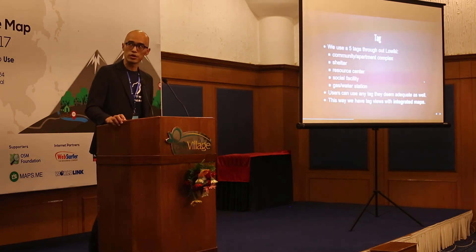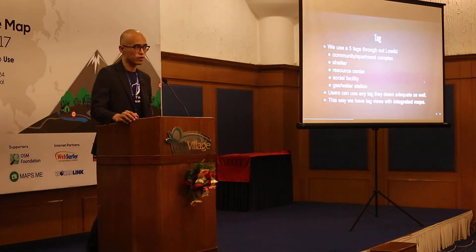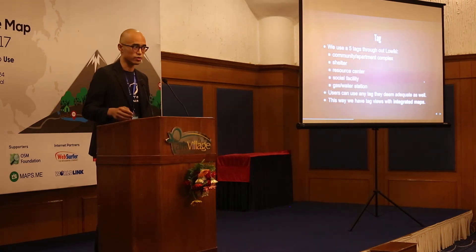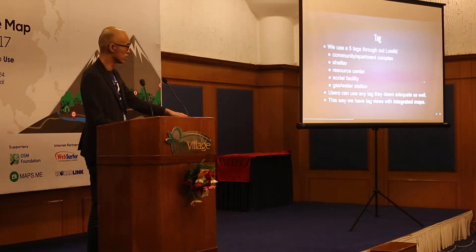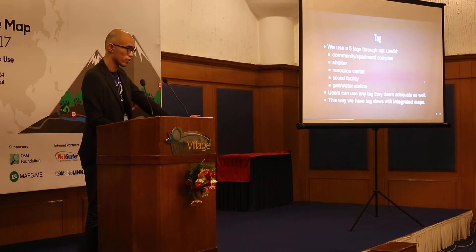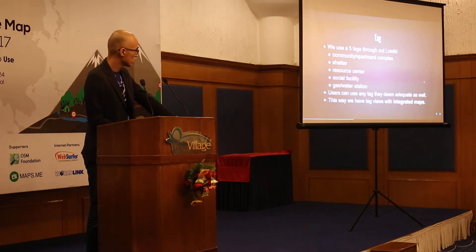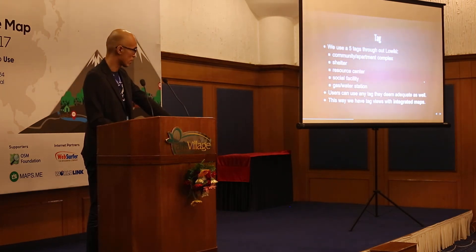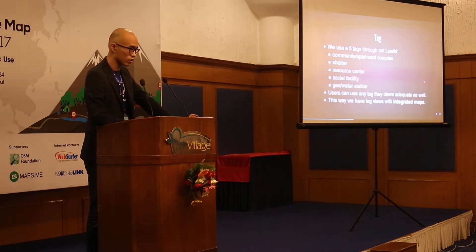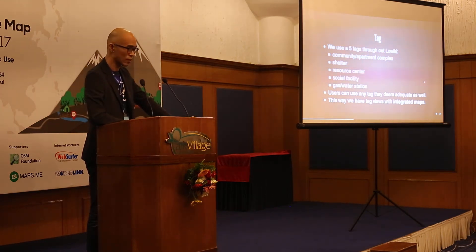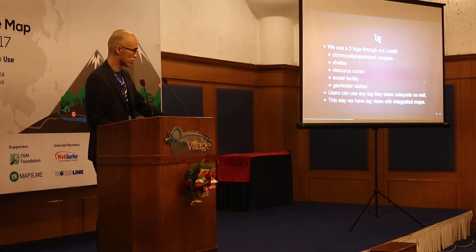For tags, we start by identifying five core facilities in disaster reduction work: community and parking complex — basically where people live; shelters — where you can go for protection when disaster happens; resource centers; social facilities; and gas and water stations — places you can seek help. Other than these five default tags used throughout LocalWiki, users can also use any additional tag when these are inadequate, to tag something of interest to their local community.